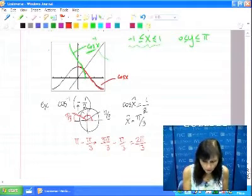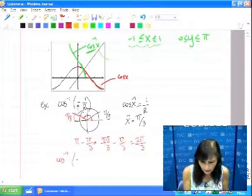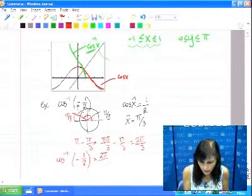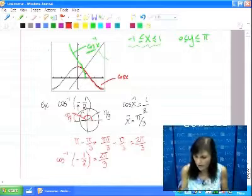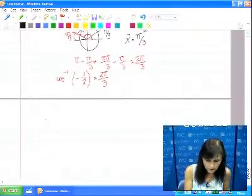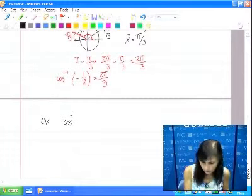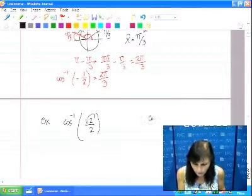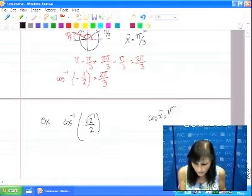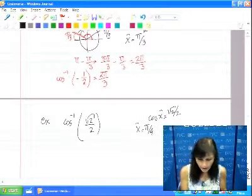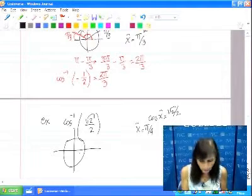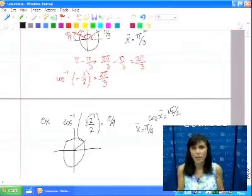So cosine inverse of -1/2 is simply 2π/3, because I need to stay in first or second quadrant. Let's do another one. What is cosine inverse of √2/2? That one is positive. I have to remember what angle gives me √2/2. I remember from my past life that it is simply π/4. Is that answer in first or second quadrant? Yes, it's in the first quadrant. Then you're done. You don't have to do any more thinking, because you are already in the first quadrant.